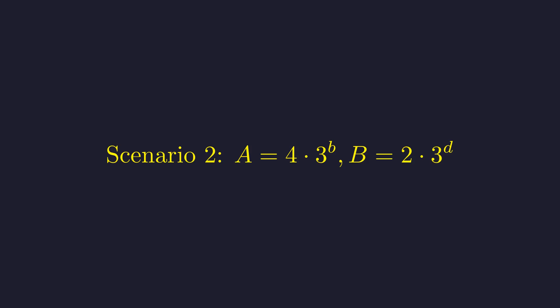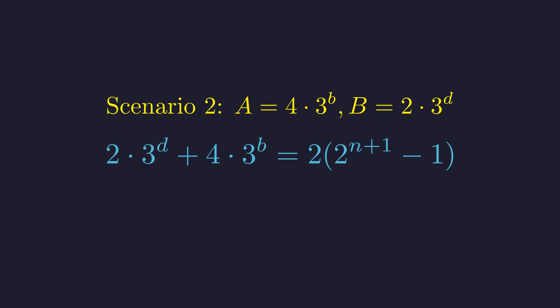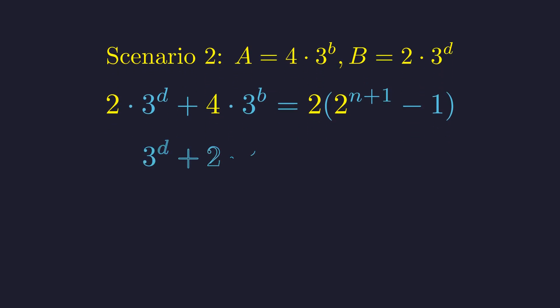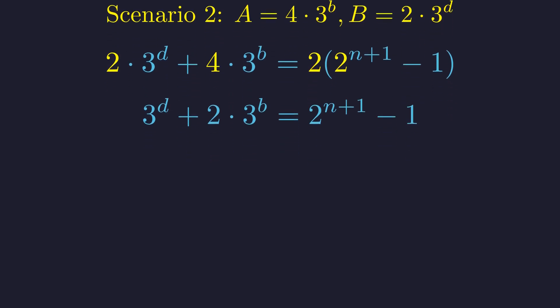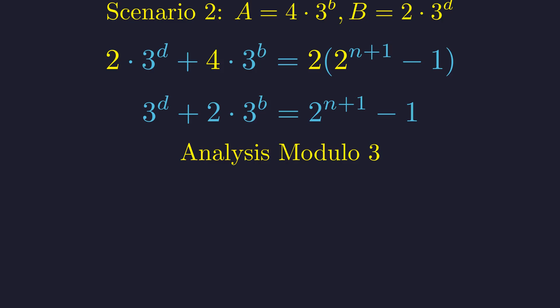Now we analyze the second scenario, where a equals 2 and c equals 1. Again, we substitute the forms for a and b into their sum equation. As before, every term is divisible by 2, allowing for simplification. Dividing by 2 results in a second Diophantine equation. To solve this efficiently, we'll use a powerful number theory tool, modular arithmetic. Let's analyze the equation's remainders when divided by 3.